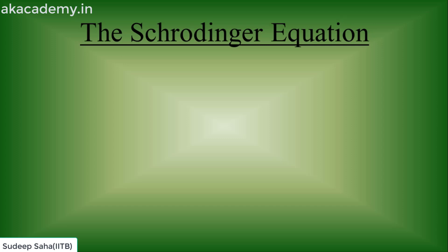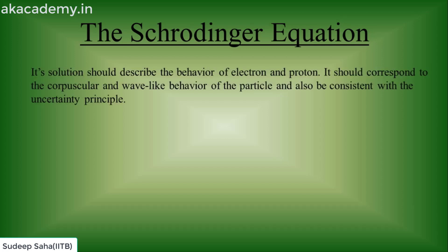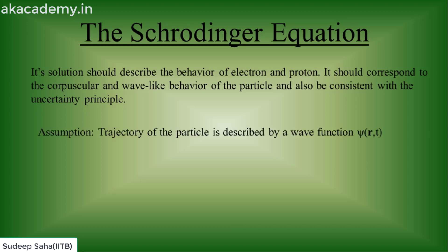We want an equation that incorporates both the particle and wave nature of a particle, and which is also consistent with the uncertainty principle. For that, we assume that the trajectory of a particle is described by a wave function psi(x, t). We need an equation to understand how this wave function evolves with time and distance.